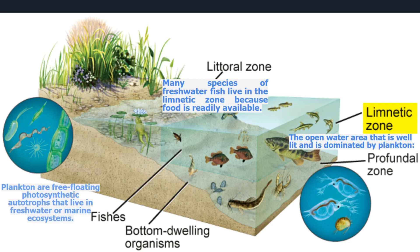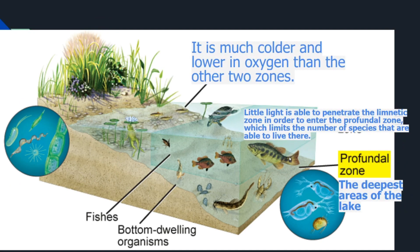The littoral zone supports many freshwater organisms because there is food both from the shore and from the water. The limnetic zone is well lit and dominated by plankton — small free-floating autotrophs and in some cases heterotrophs, such as algae and microorganisms floating in the water. The profundal zone is much colder, has less oxygen due to less sunlight, fewer species, and is of course the deepest area of the lake.